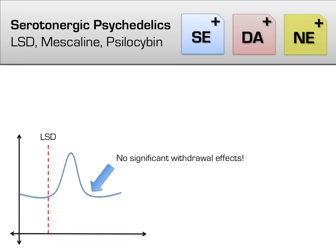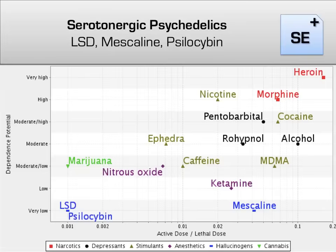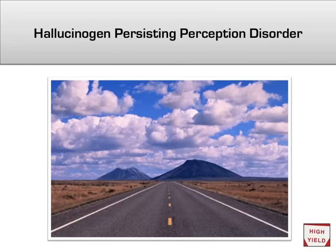Withdrawal symptoms from serotonergic psychedelics are questionable and inconsistent, if any. Serotonergic psychedelics are considered significantly less harmful both physiologically and psychologically compared with other drugs, and drugs such as LSD are well tolerated in the short term. One potential long-term effect of chronic hallucinogen use is hallucinogen persisting perception disorder, characterized by visual and sensory abnormalities that do not go away — possibly a result of permanent alterations to serotonin receptors in the frontal cortex. These abnormalities include halos surrounding objects, visual snow, and changes in perceived dimension.